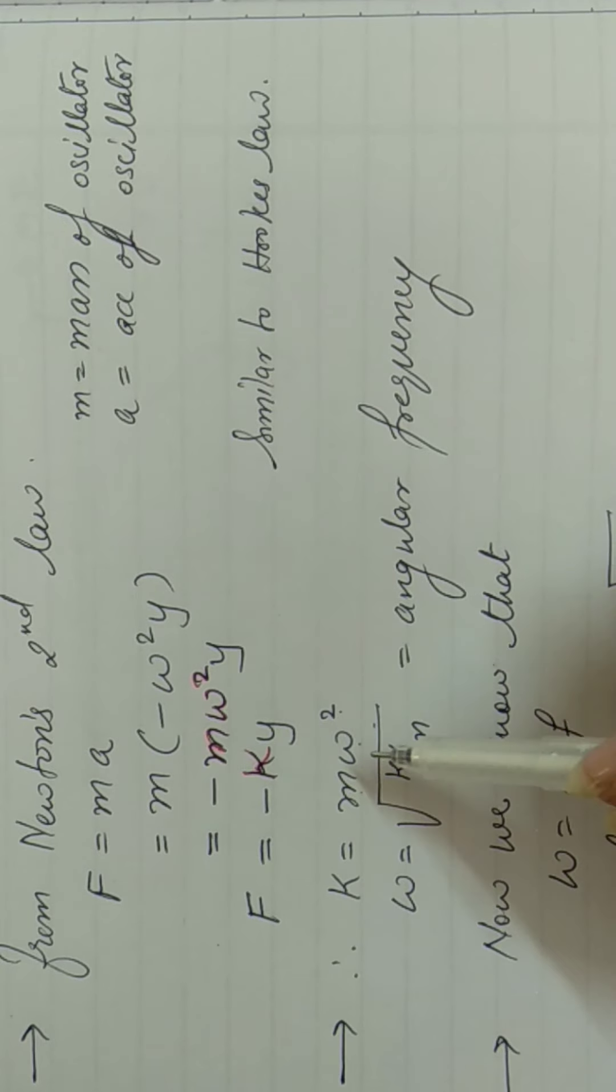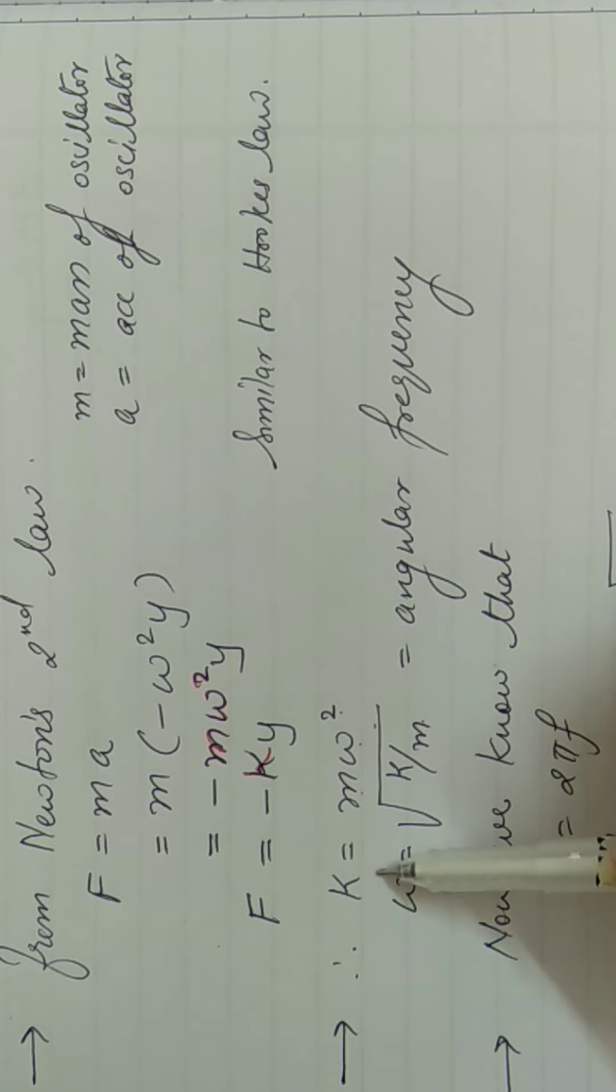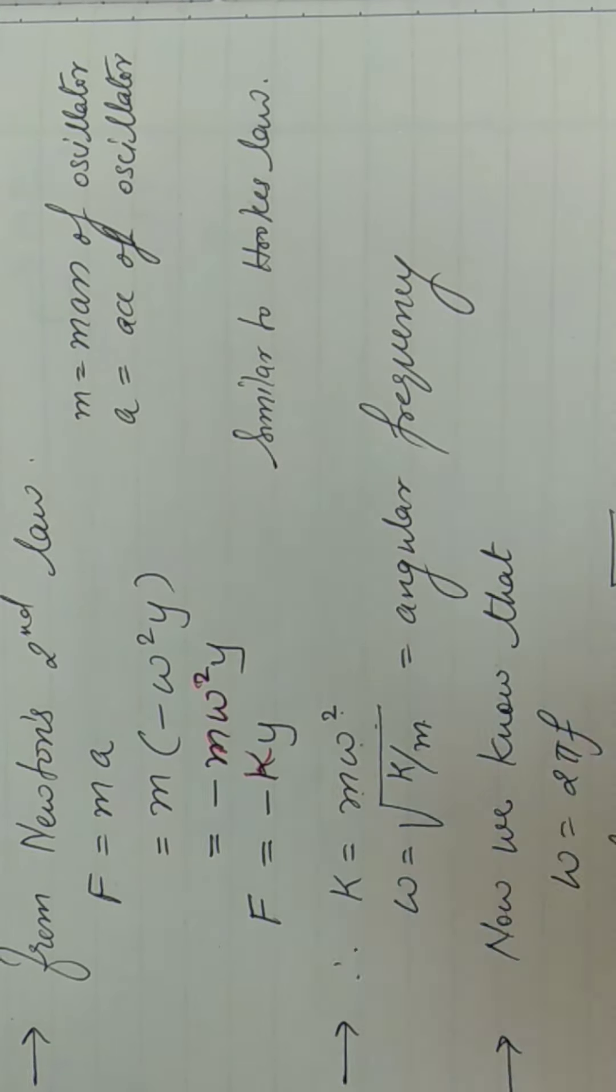So agar mujhe angular frequency doonni hai, toh ham omega ko subject banayenge. So I will get root k by M. Yaha square tha na. So agar yaha ka square hatana hai mujhe, toh power me half se multiply karna padeega. Toh woh kya dhe dega? Mujhe square root dhe dega.